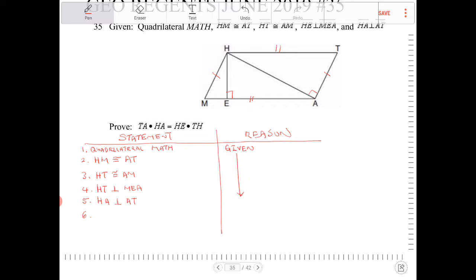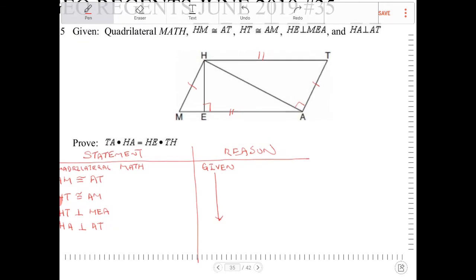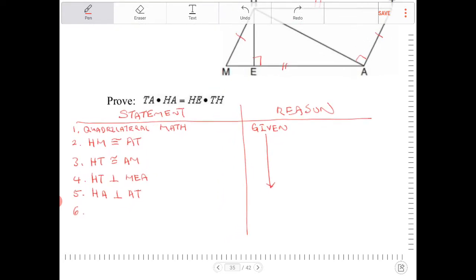What we have here is basically a similar triangle setup. Sometimes you need to work backwards from the final statement to visualize how to navigate through the problem. Quadrilateral MATH is a parallelogram — and how do I know that? Because opposite sides are congruent. So MATH is a parallelogram, and the reason is opposite sides are congruent.